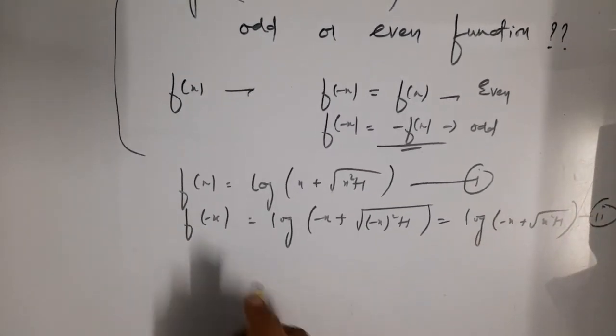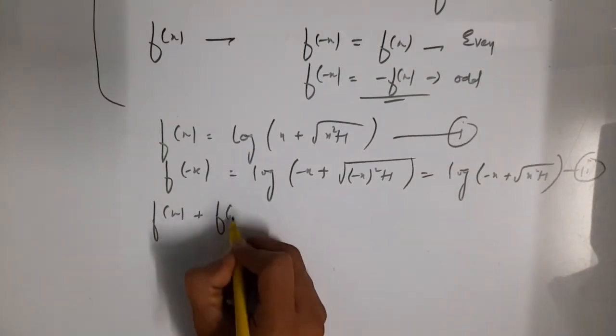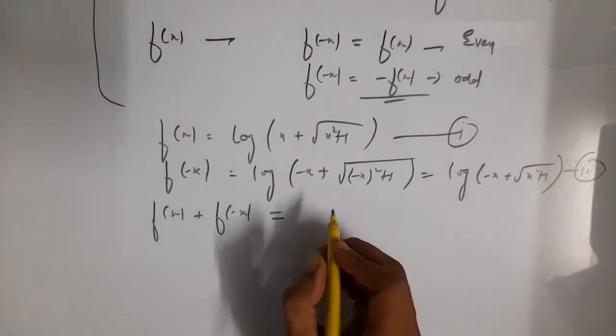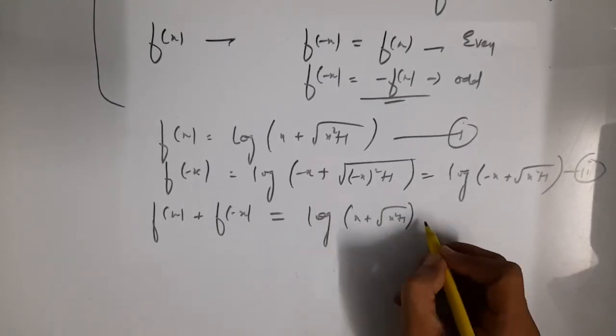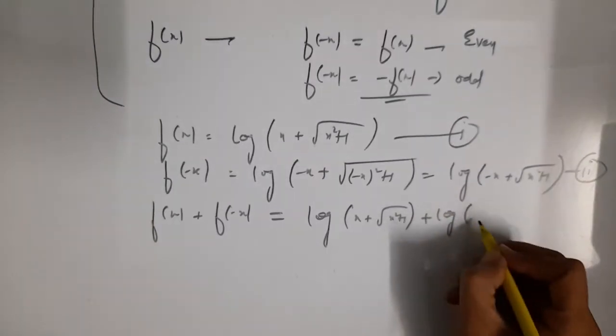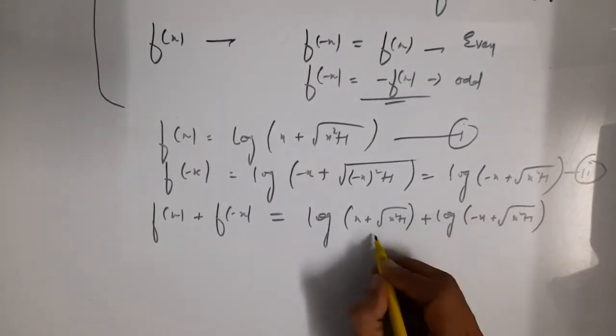If we simply add them, what we get here: f x plus f of minus x is going to give us log of x plus root x square plus 1 plus log minus x plus root x square plus 1.